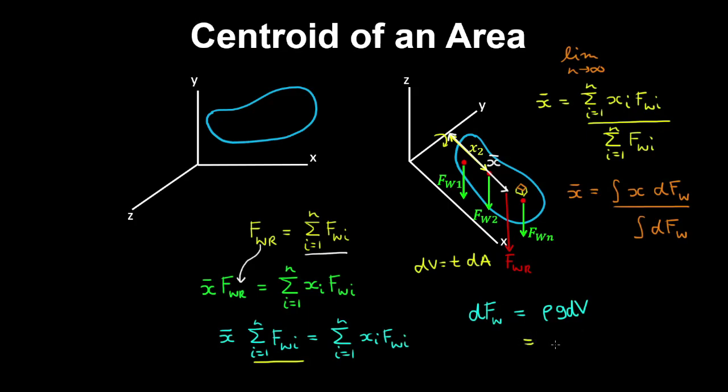And if you substitute this for dV, we obtain ρg by the thickness by dA. And now we can substitute into this expression, and we obtain an expression for the centroid as an integral over an area. This will be x by ρgT dA over the integral of ρgT dA.